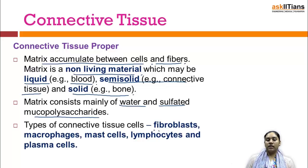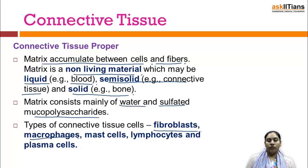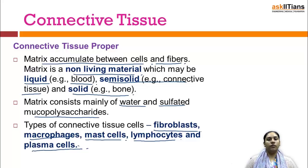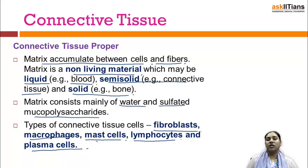The types of connective tissue cells include fibroblast cells, which are responsible for forming and secreting the fibers, as well as macrophages, mast cells, lymphocytes, and plasma cells. Macrophages and lymphocytes are immune cells responsible for fighting any foreign or infectious particles present in our body. Mast cells are responsible for secreting pharmacological substances like histamine and serotonin.